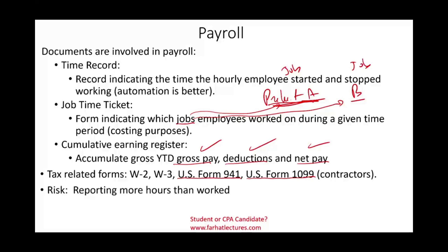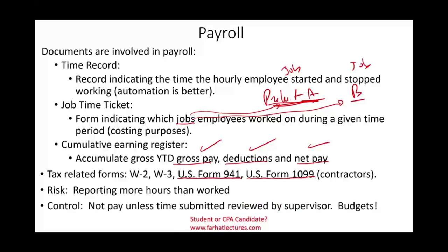The main risk in the payroll cycle is overpaying employees — reporting more hours than actually worked. If an employee is underpaid, they will complain; the risk runs in the other direction. The control is requiring supervisor approval before the treasurer issues payment. You could require two approvals for stronger control, or set budget caps for a period so that no more than the budgeted hours can be approved.